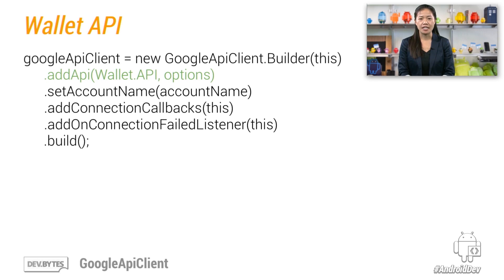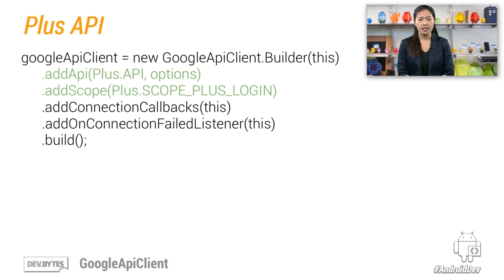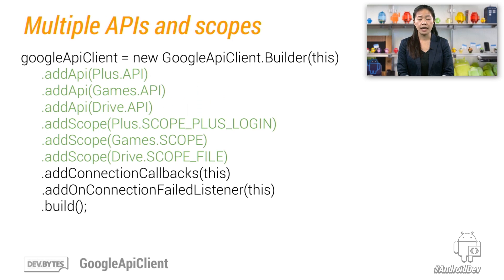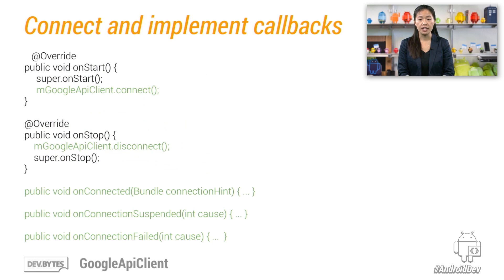Let's talk about how to implement it by seeing some examples of how you would initialize the Google API client. This shows you how to add the Wallet API and specify an account. This shows the Plus API and scope. This shows the Drive API and scope. And now the real difference is that you can add multiple APIs and scopes easily, which is a huge win in terms of saving you development time and complexity. So once you have initialized the client with the APIs you need, you have to connect and implement callbacks for the single Google API client, as seen here.